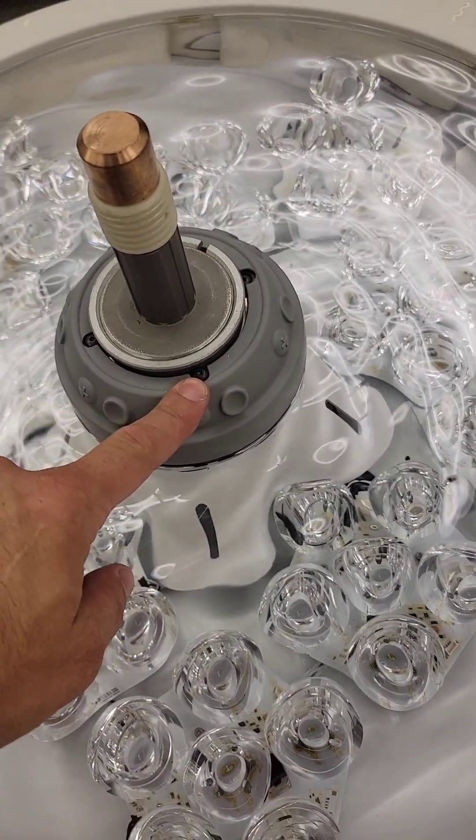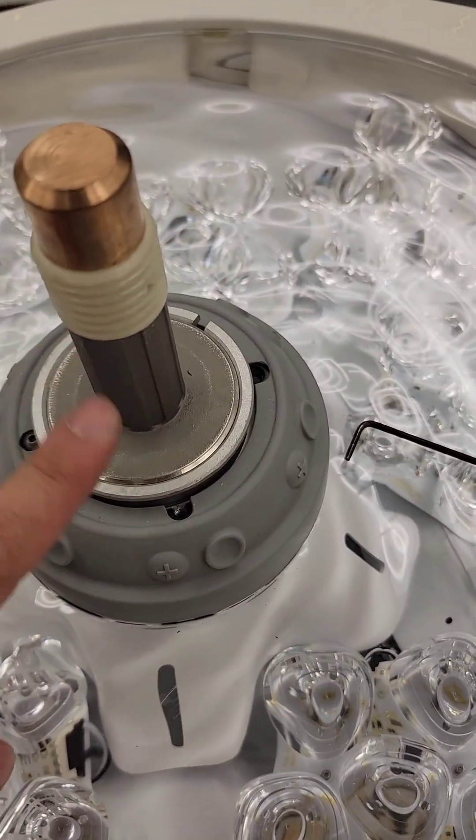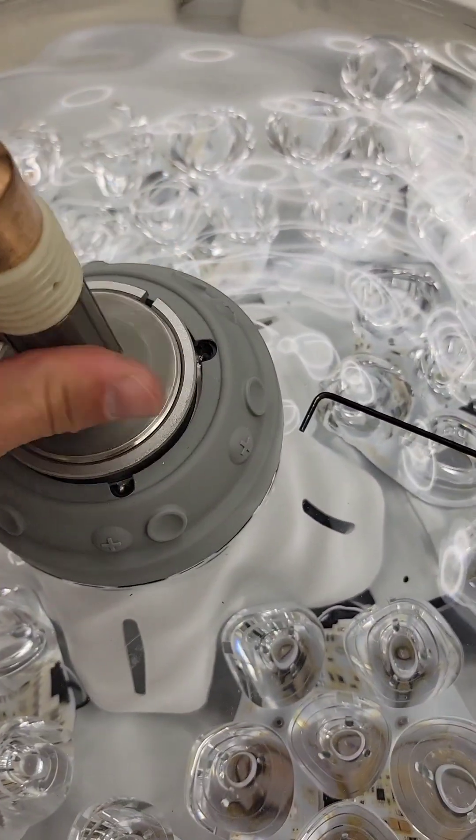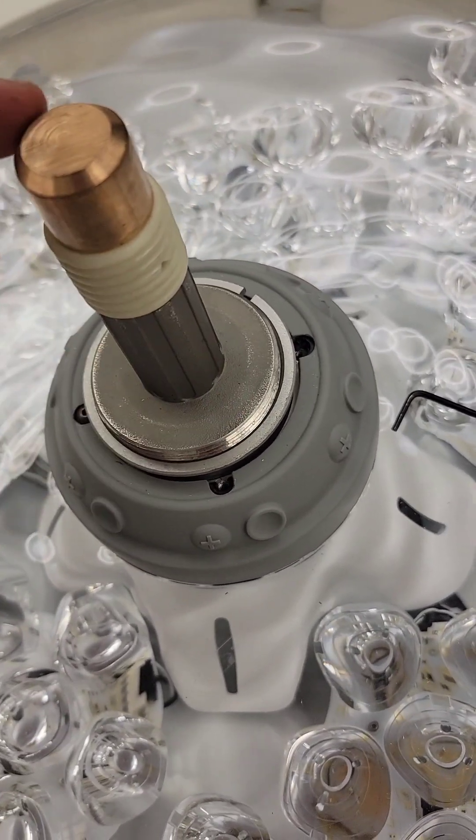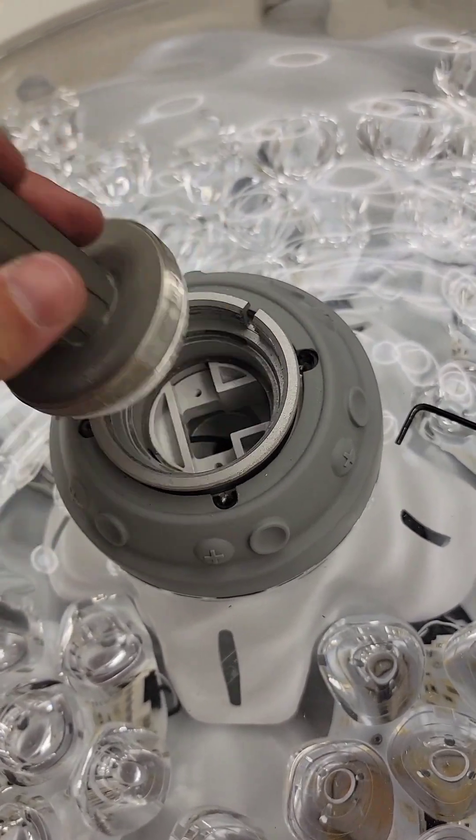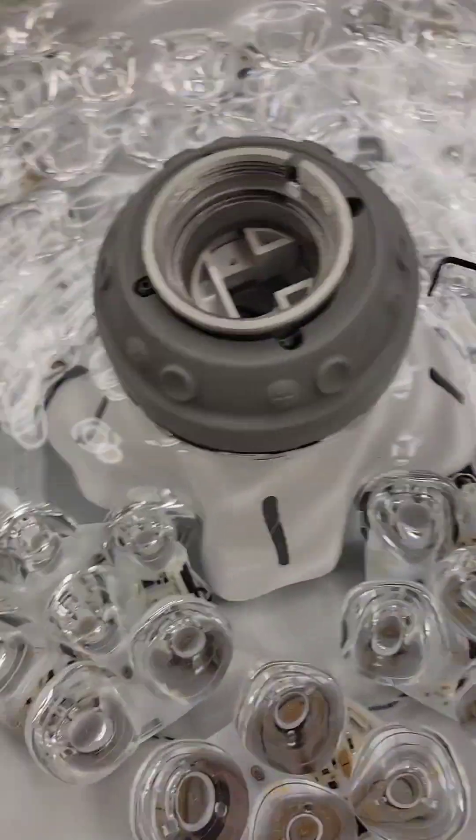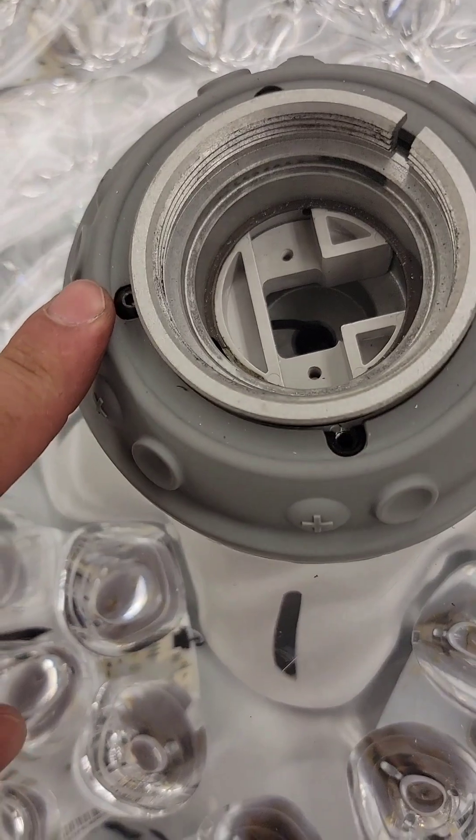Next up is these four screws. I may have misspoken - you got to pull this out first too. Turn this down here. Unscrew here, not here. There we go. Off to the side. And then these four screws.